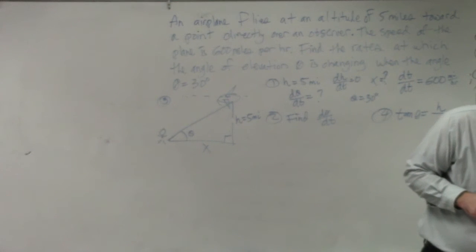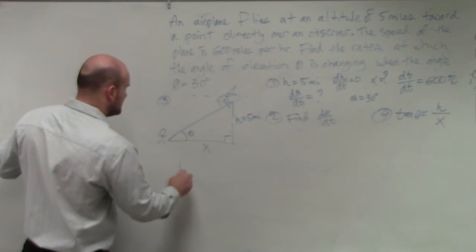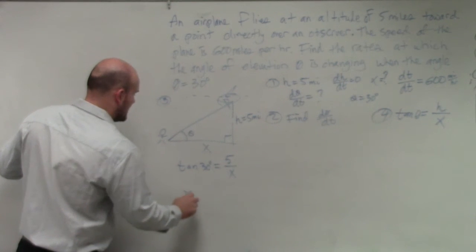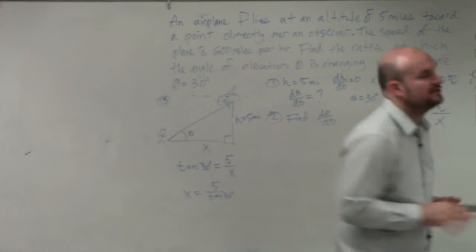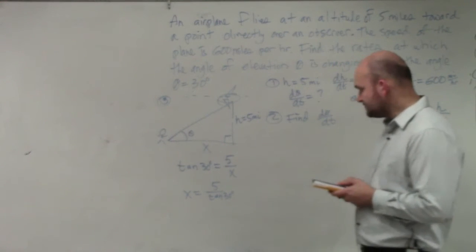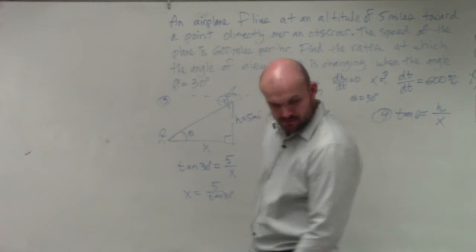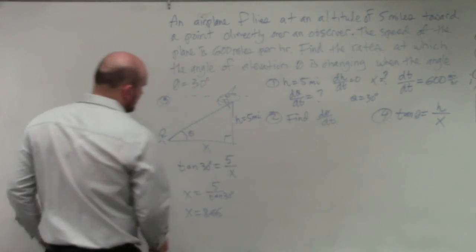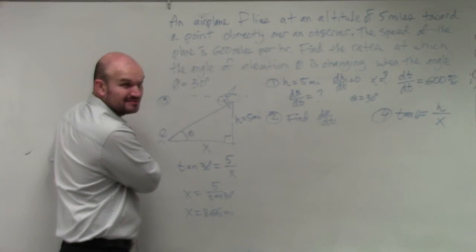Now, we can go ahead and identify what x is if we want to go ahead and find x. Because we could simply say at tangent of 30 degrees, we have five miles over x. So therefore, x equals five divided by the tangent of 30 degrees. So, going back into my calculator, since I'm talking about 30 degrees in degree mode, I make sure that in my calculator, I have my mode set equal to degrees. And I'll just do five divided by the tangent of 30 degrees. So x is going to be 8.66 miles when tangent of theta equals 30 degrees.